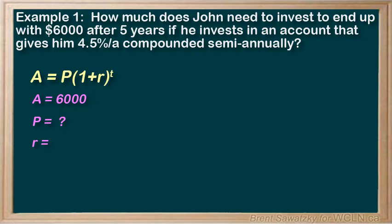r, per compounding period, would be 4.5% divided by 2. t is our number of compounding periods. Our investment is for 5 years, but compounding twice a year means we would have 10 compounding periods.